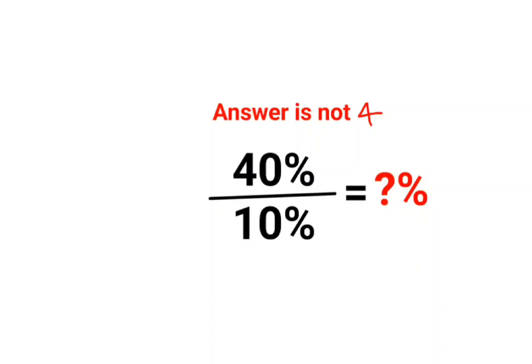Welcome everyone. So yes, many people thought that the answer for this question, which is basically 40% divided by 10%, is supposed to be 4, which is correct actually. The answer should have been 4.